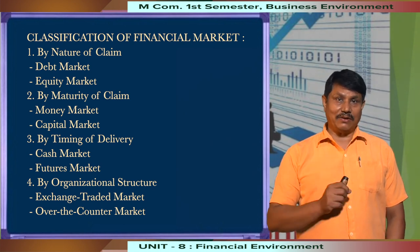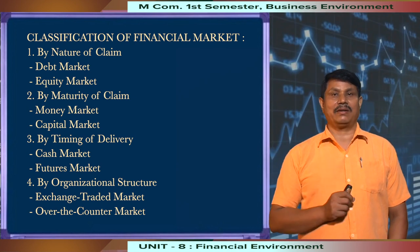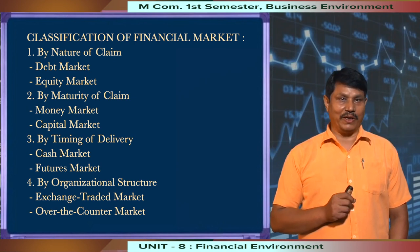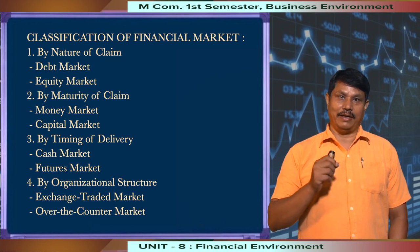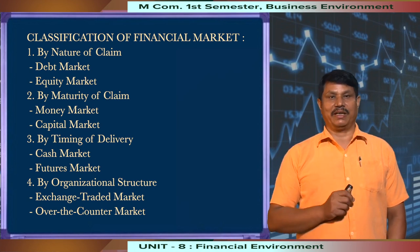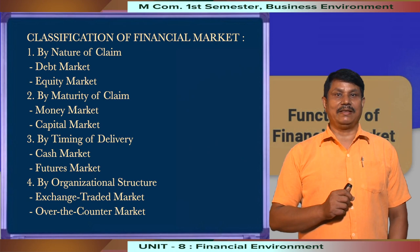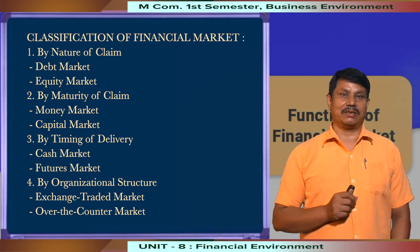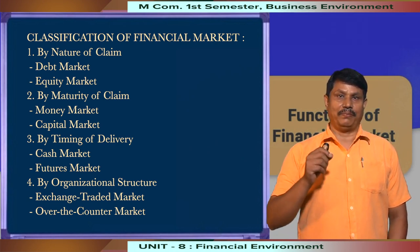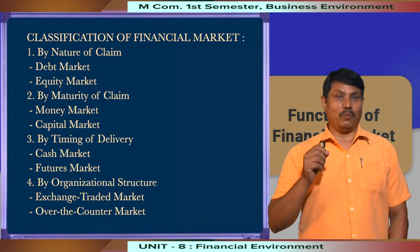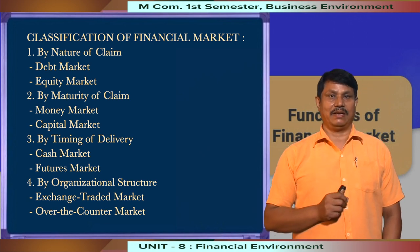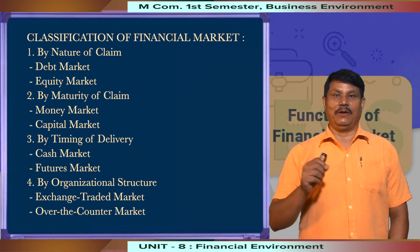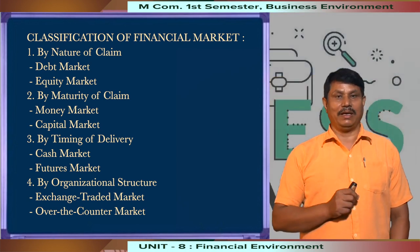By nature of claim, financial markets can be divided into two parts: debt market and equity market. Debt market is a market where fixed bonds and debentures or bonds are exchanged. Equity market is the place for investors to deal with equity.